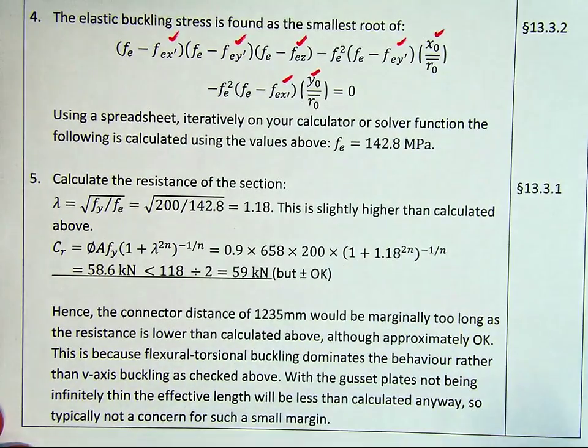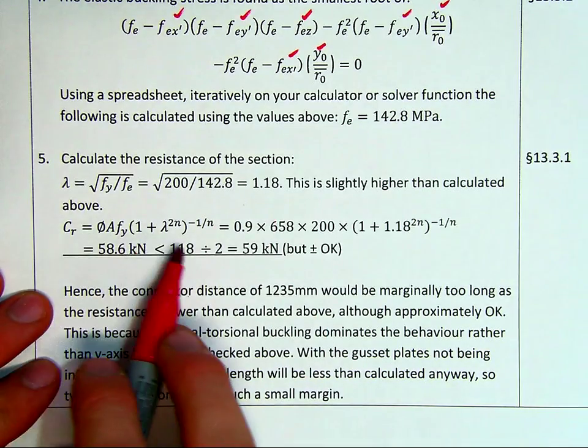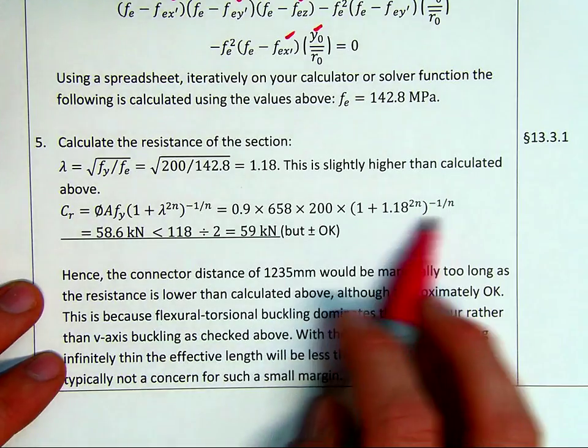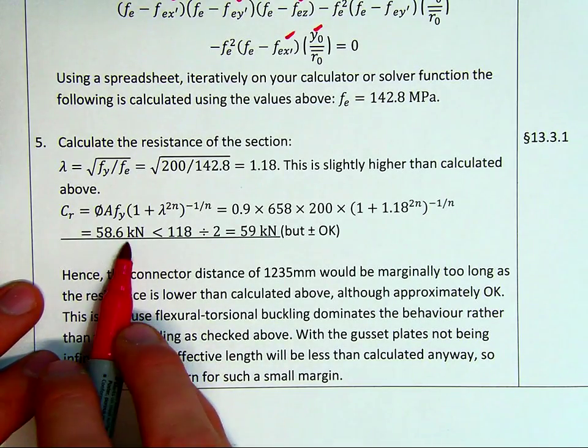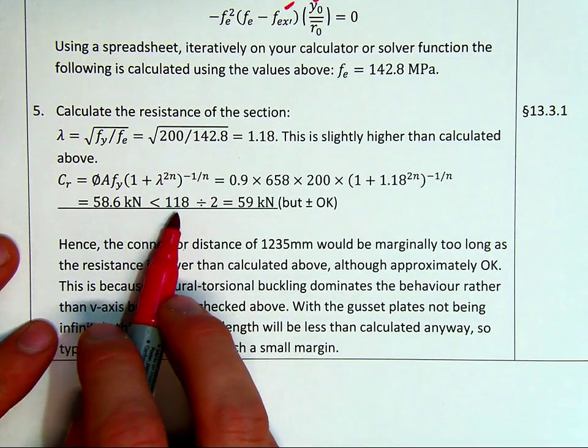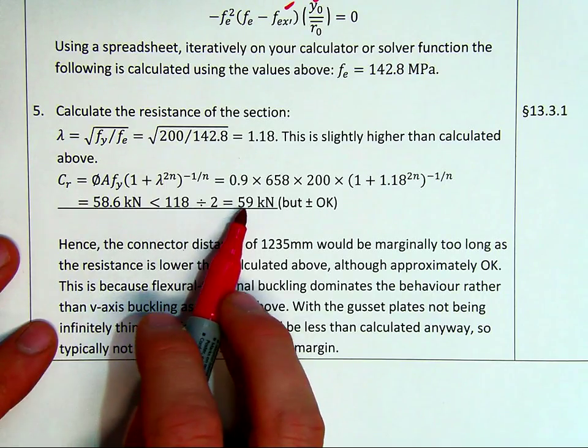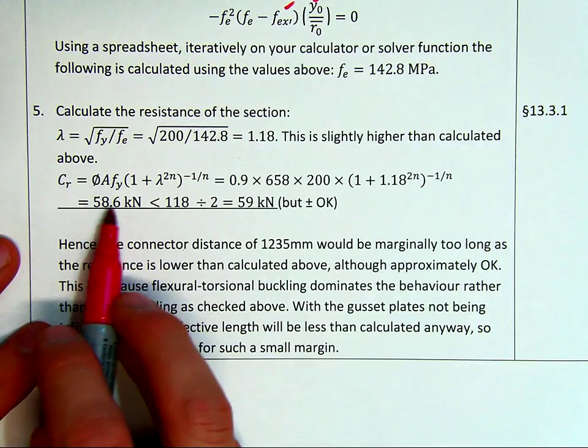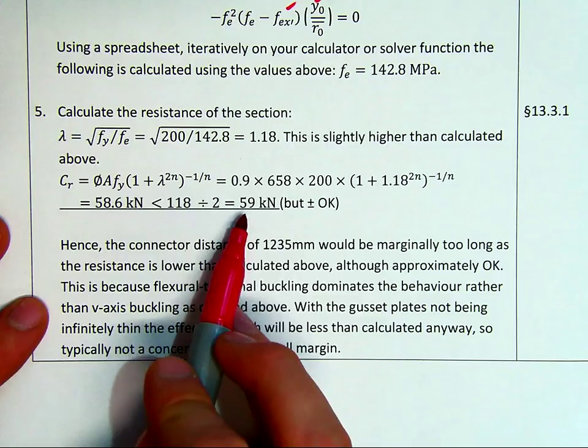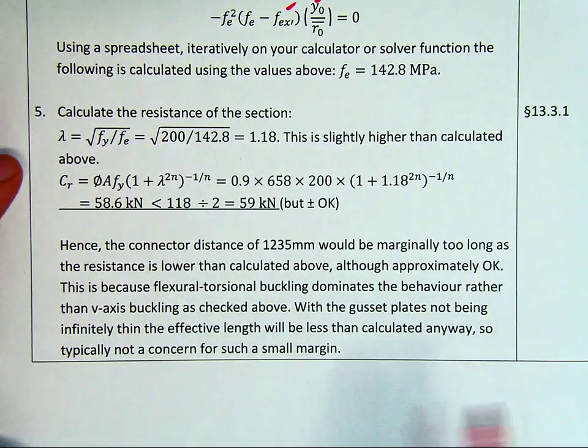And so that's where we get the stress from, 142.8. Then we calculate as per normal section, our non-dimensional slenderness, and we can get our compressive resistance. We run through the calculations, and we have a final resistance, 58.6. In the previous example, we found out that the total resistance of the whole section is 118, so that would mean each one carries about 59. Hence, this is approximately okay. Our calculations, we give or take, it's slightly less than we calculated above, but the margin is so small we're not really going to worry about it.